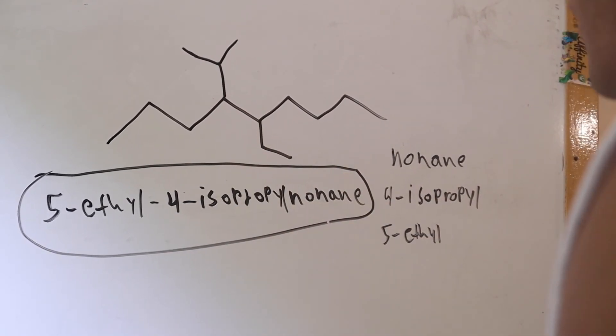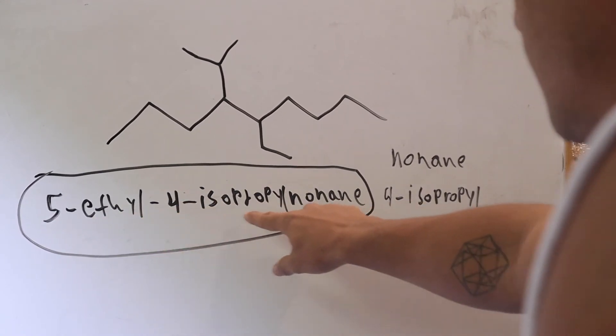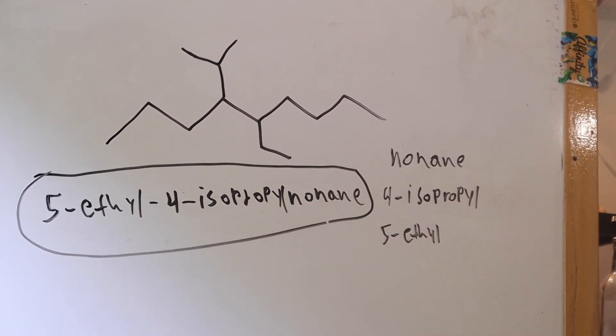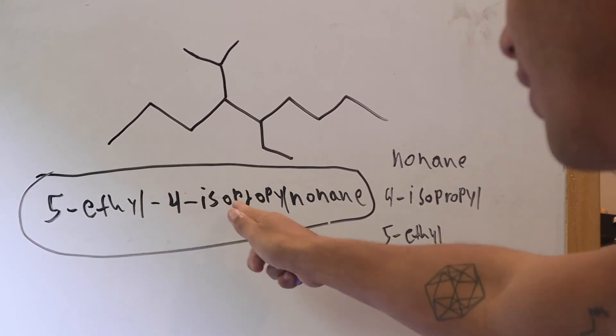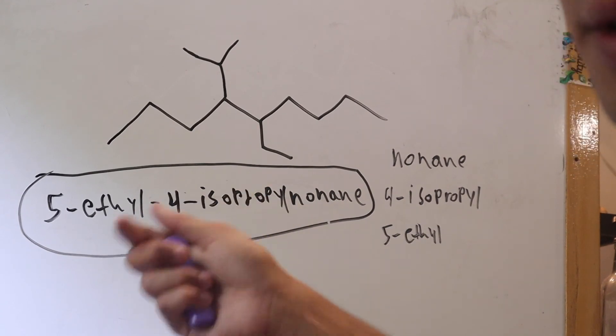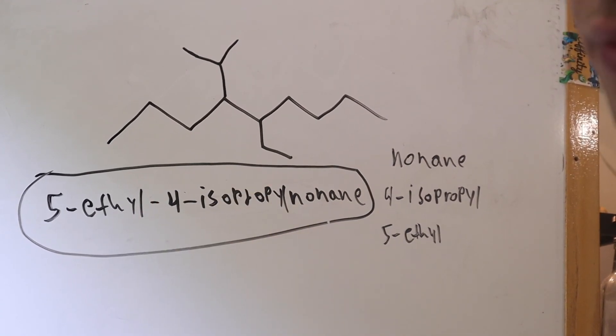Then when you go to naming it, that's when you go to alphabetizing. And you're going to structure it like that. So even though 4 comes before 5, ethyl comes before isopropyl because it's before in the alphabet. So hope that helped out.